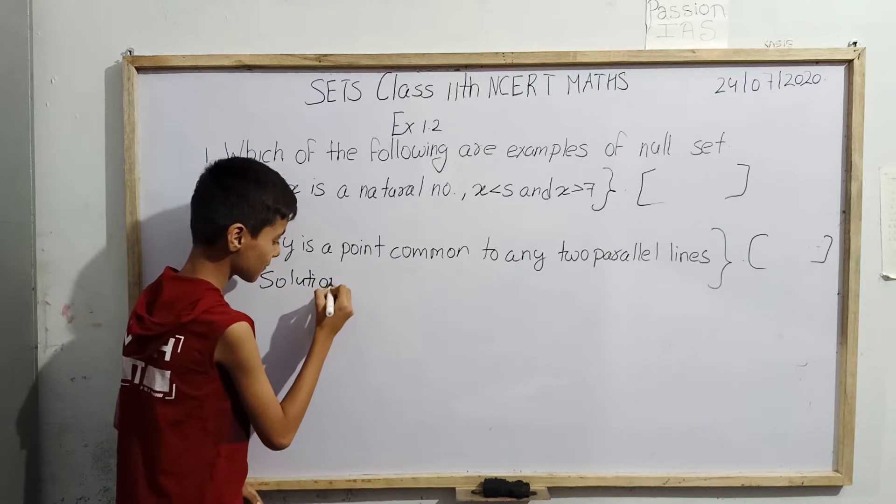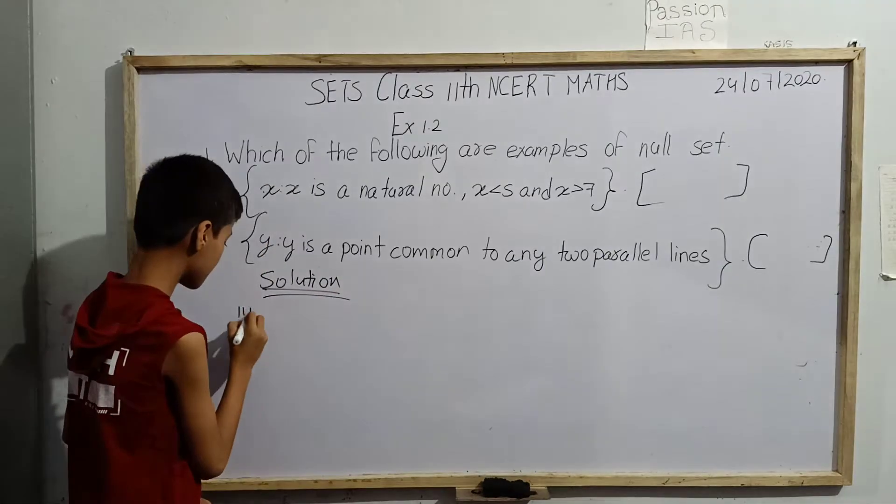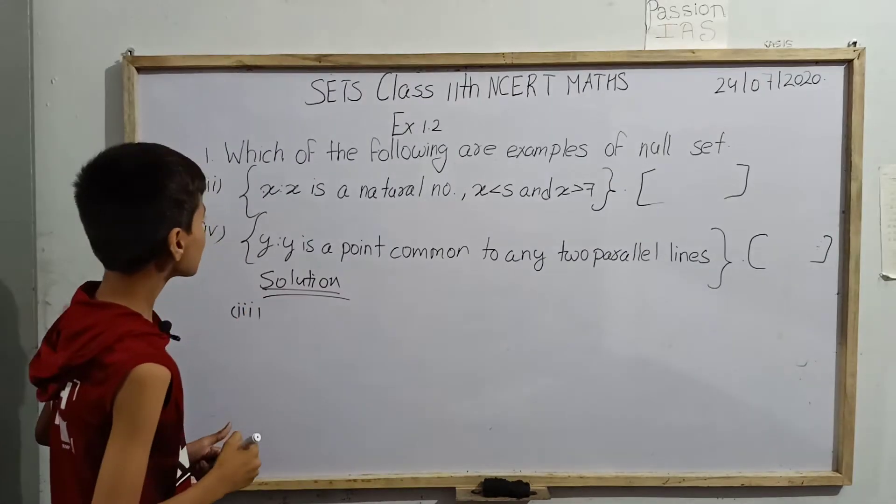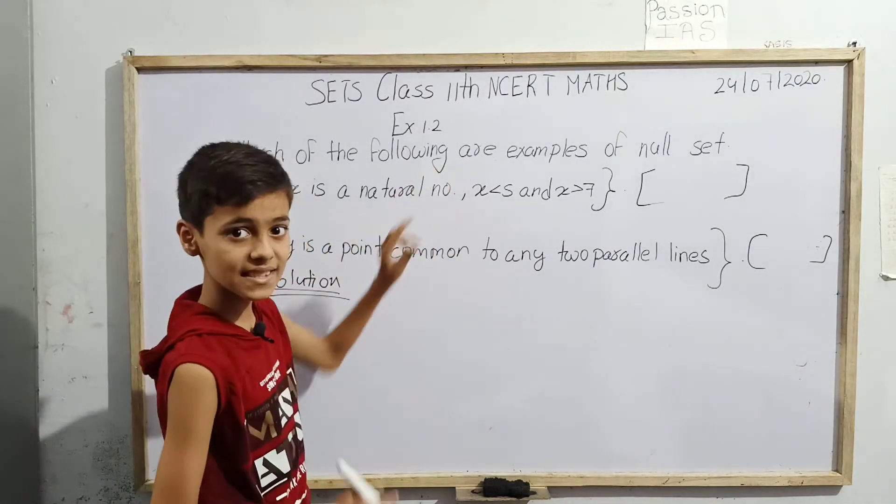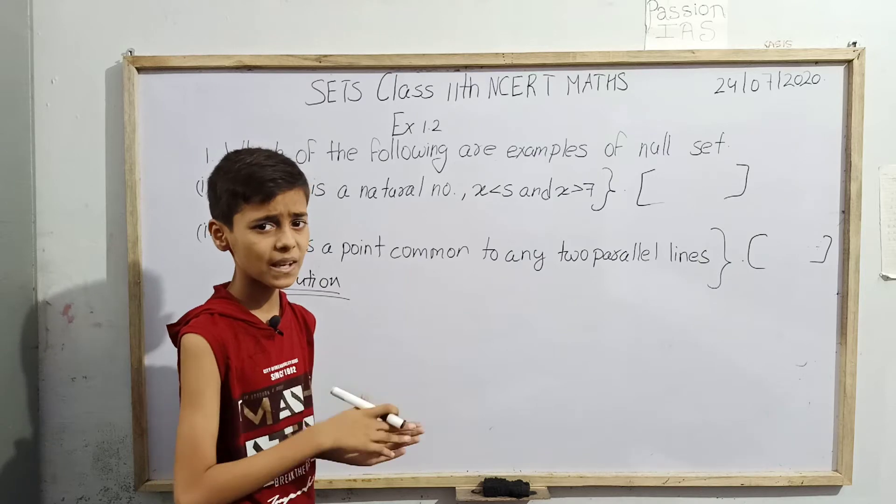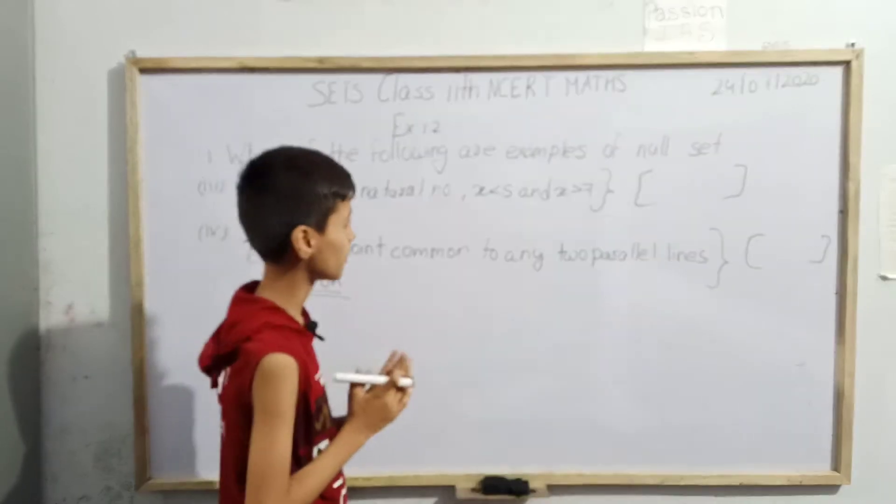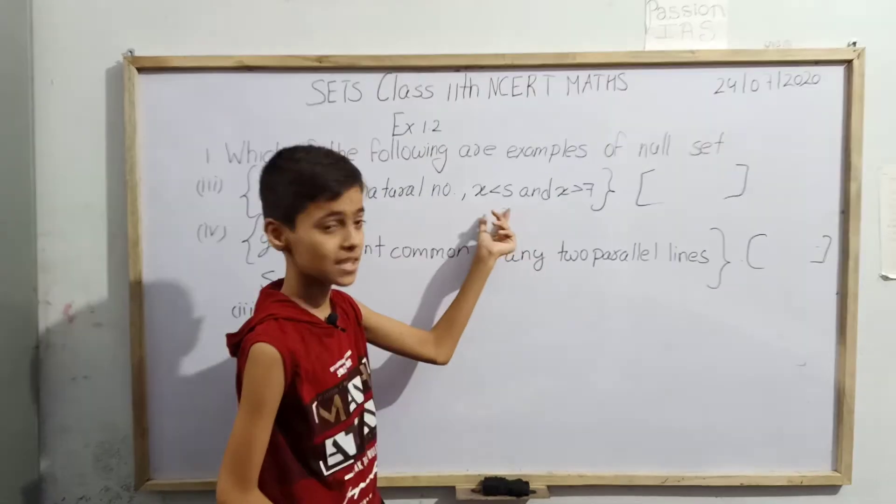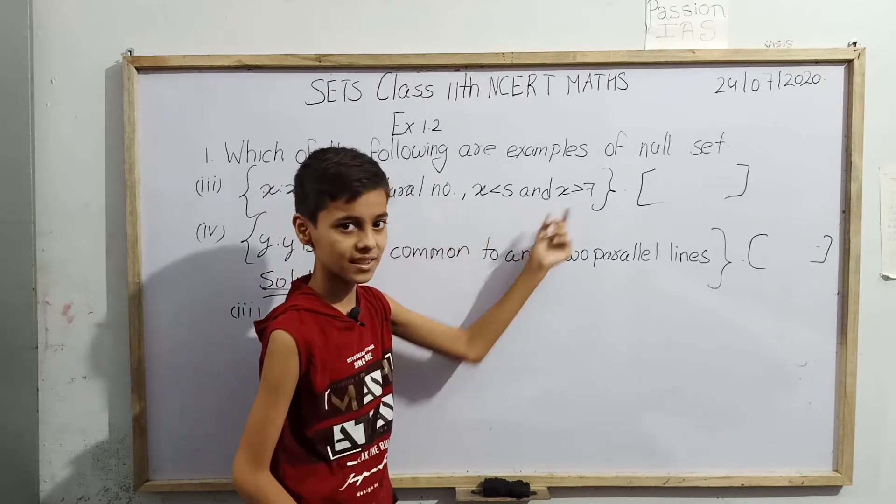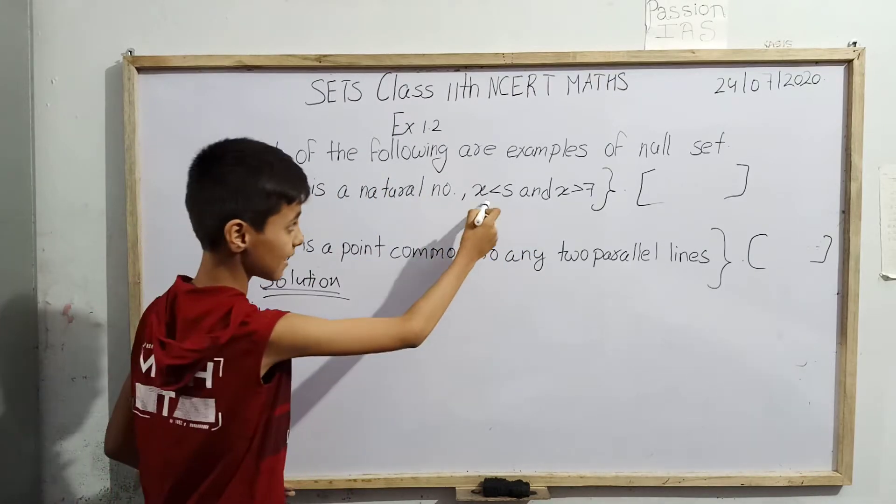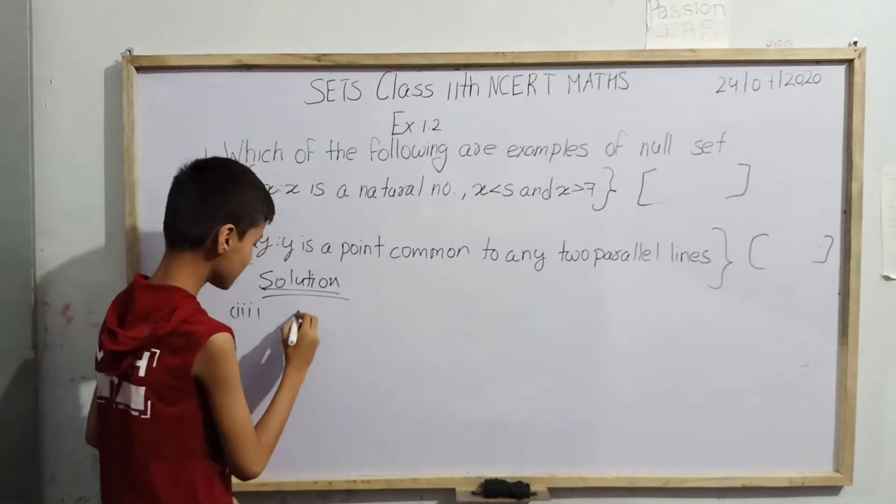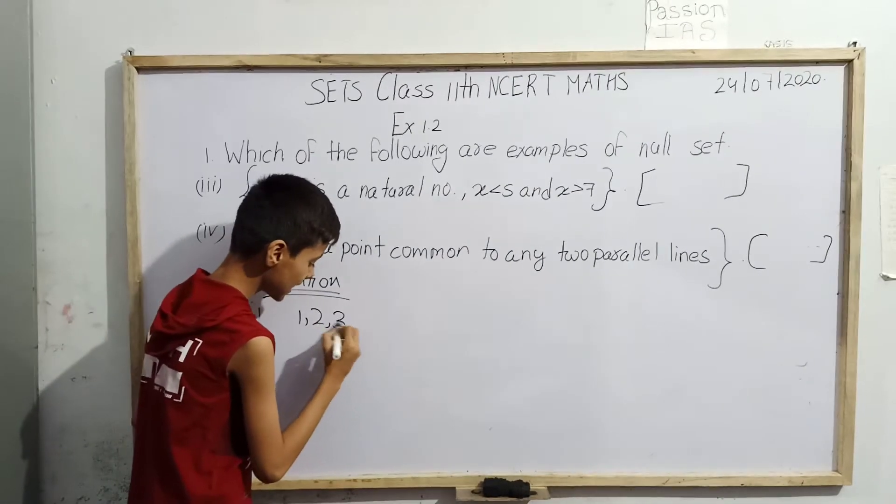We'll solve for third. x such that x is a natural number means whichever elements in this set are present, all are natural numbers. We have to imagine all as natural numbers, such natural numbers which are less than 5 and greater than 7. First let us imagine which natural numbers are less than 5.